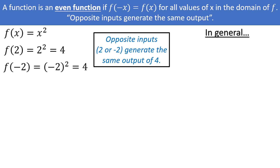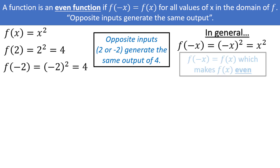More generally, f of negative x is equal to negative x squared, which is just x squared. When we plug in the negative version of the input, we get the original function back again, which is what makes f of x equals x squared even.